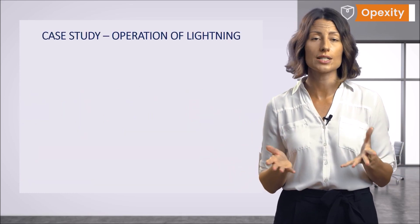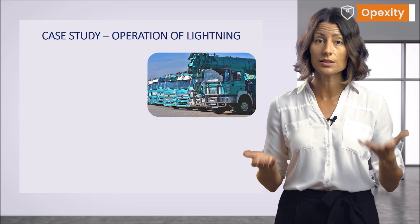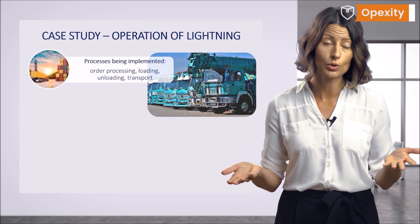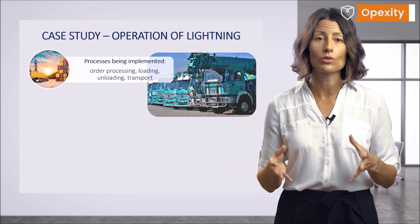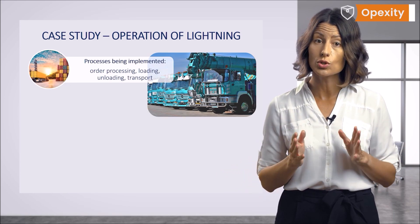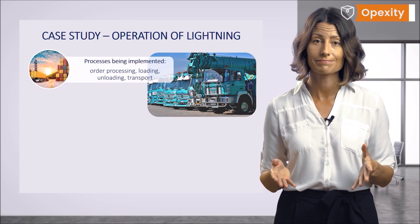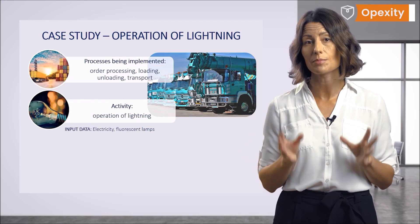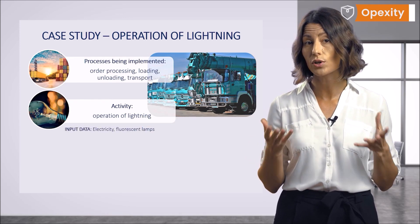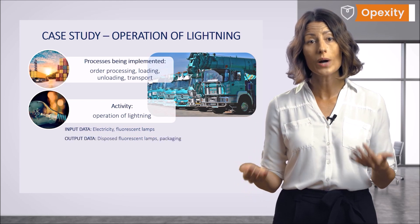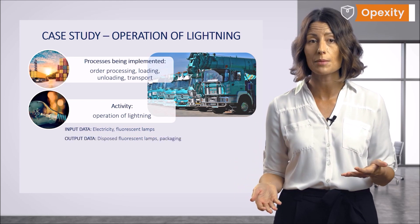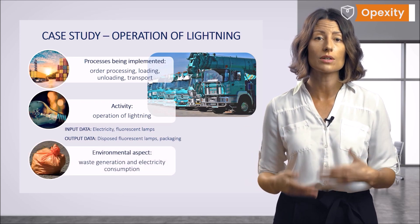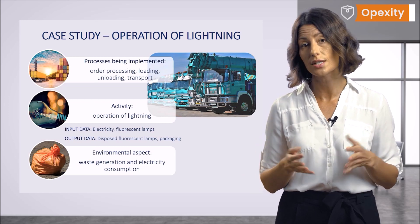Let's assume that you run a transportation company. Your business activities include order processing, loading and unloading, and transport. You also have an office where you manage your transport orders. Let's take the operation of lighting into consideration. The input data will be electricity as well as the fluorescent lamps, and the output data will be waste in the form of used fluorescent lamps and packaging waste. The environmental aspect will be the generation of the aforementioned waste, as well as electricity consumption.